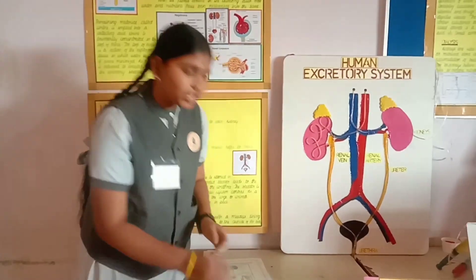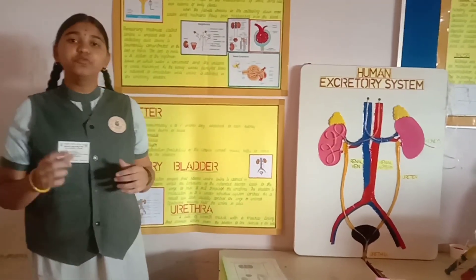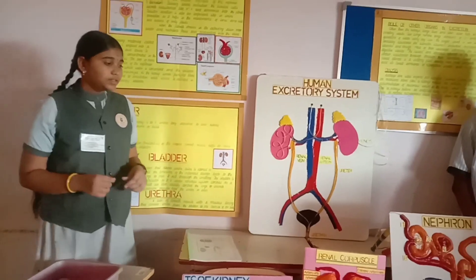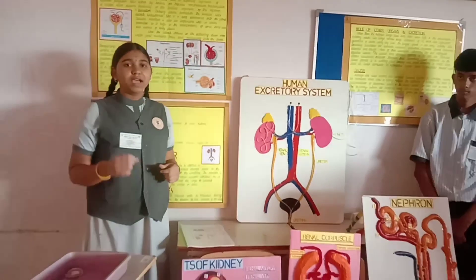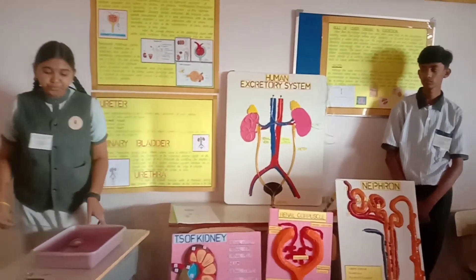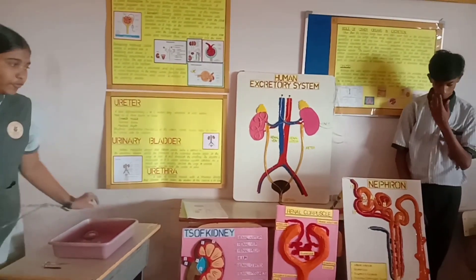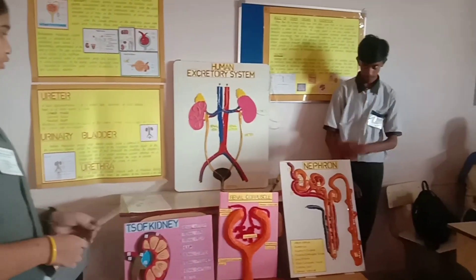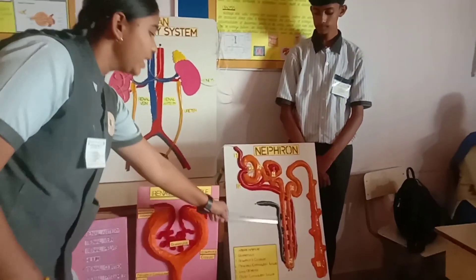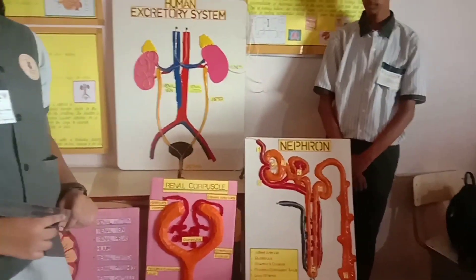In each kidney there are nearly one million nephrons present. These are the basic and functional unit of the kidney. The nephrons consist of two parts: the renal corpuscle and the renal tubular region.